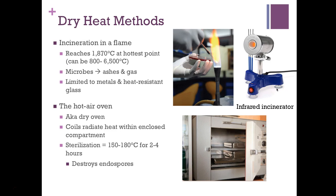The hot air oven, also known as a dry oven, has coils that radiate heat within an enclosed compartment. Sterilization takes place at 150 to 180 degrees Celsius for about two to four hours, which destroys endospores. It is used for glassware, metallic instruments, powders, and oils. Avoid using it on materials that burn at high temperatures, such as paper, cotton, or plastic.